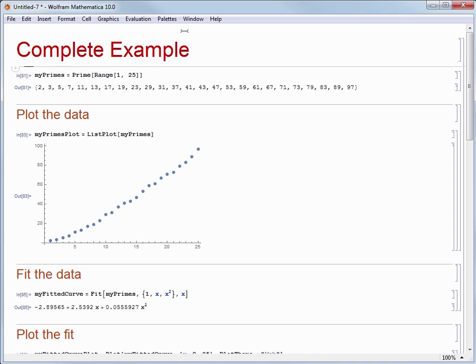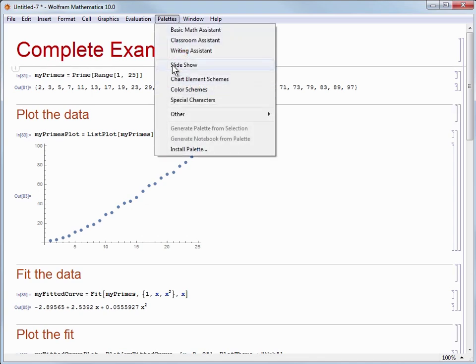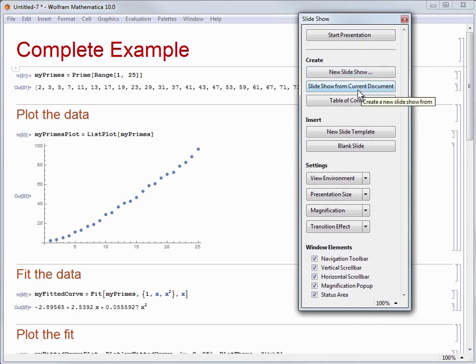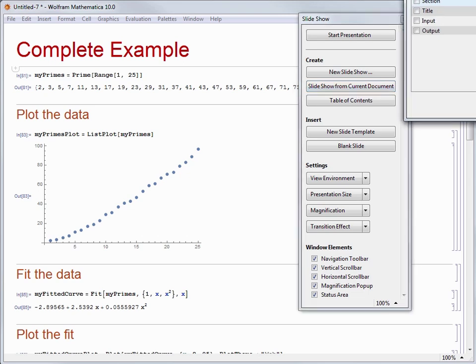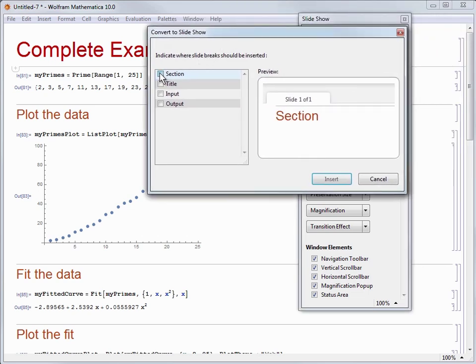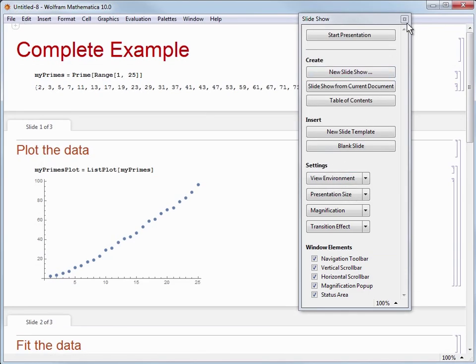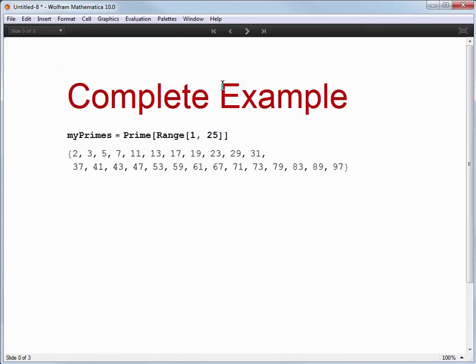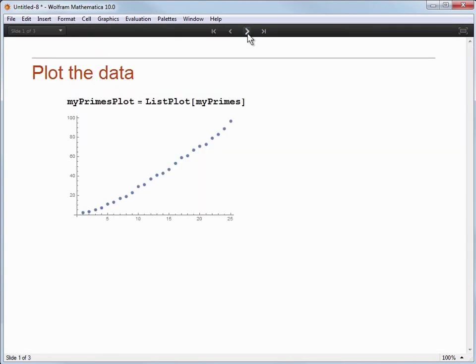Now that we've done that let's open up the slideshow palette from the palettes menu. And then we will convert our existing document into a slideshow. We'll want to put in slides each time a section cell is encountered. So we can check that box and then click the button to finish. And now we set the screen environment to slideshow to look at the full presentation of what we've created.